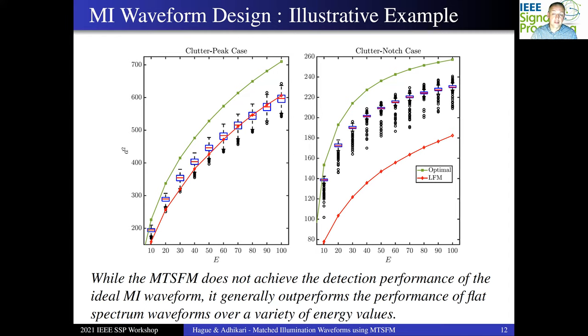Now, with the clutter notch case, it's a slightly different story. Again, while the multi-tone SFM can't quite achieve the optimal detection performance, it is easily outperforming the LFM. Well, why is this happening? Recall that the clutter notch case had a very clear peak at DC, followed by spreading the rest of the waveform's energy kind of equally across the band. This is something the LFM really can't match up to. It's placing energy equally. It can't put energy in a specific band of frequencies the way that the multi-tone SFM does. And that's why the multi-tone SFM is easily outperforming the LFM in this particular case.